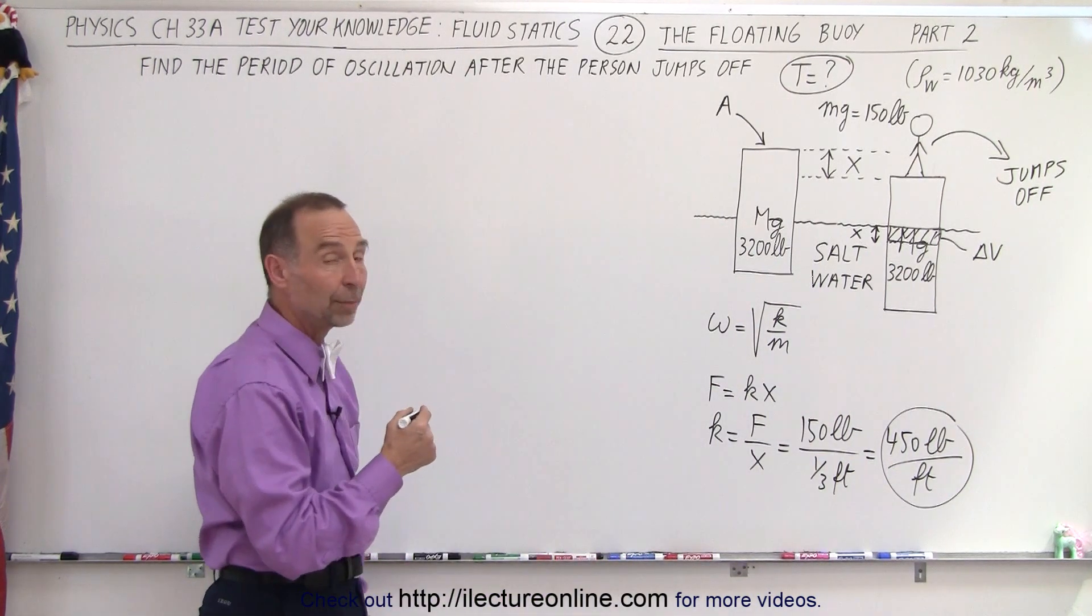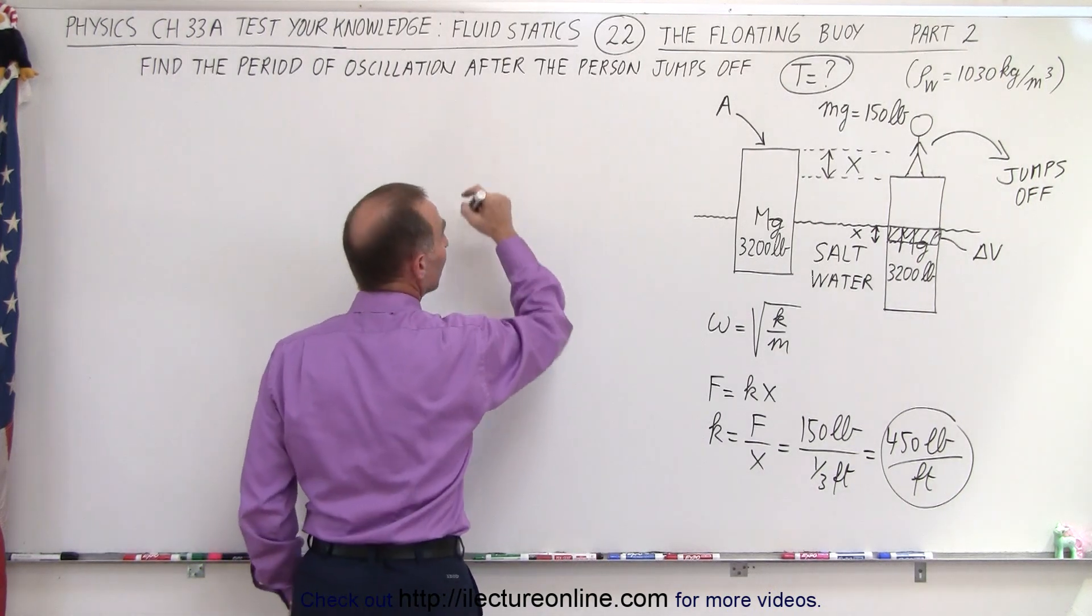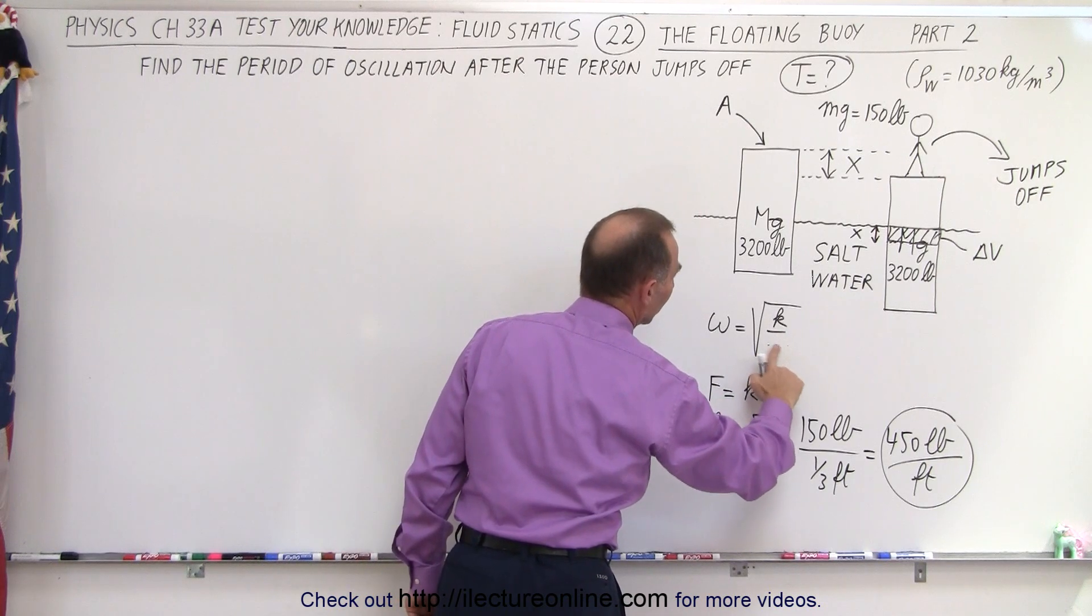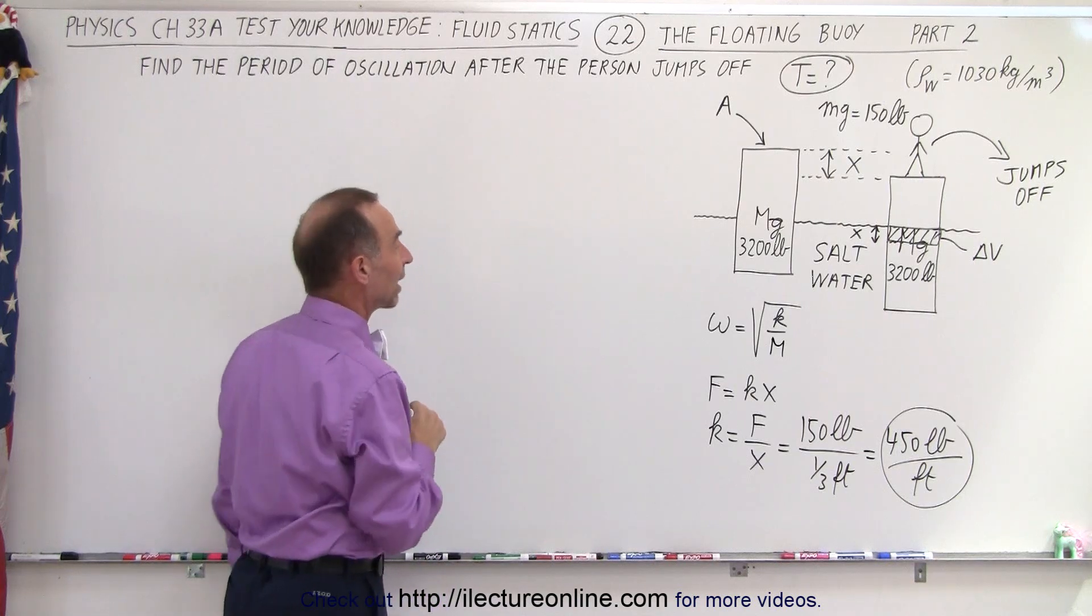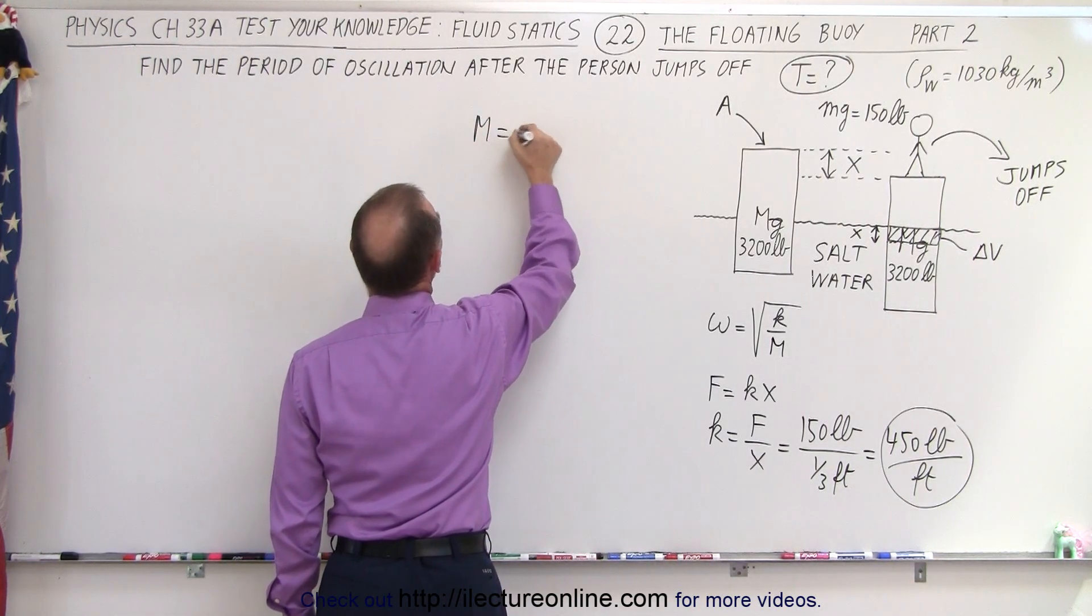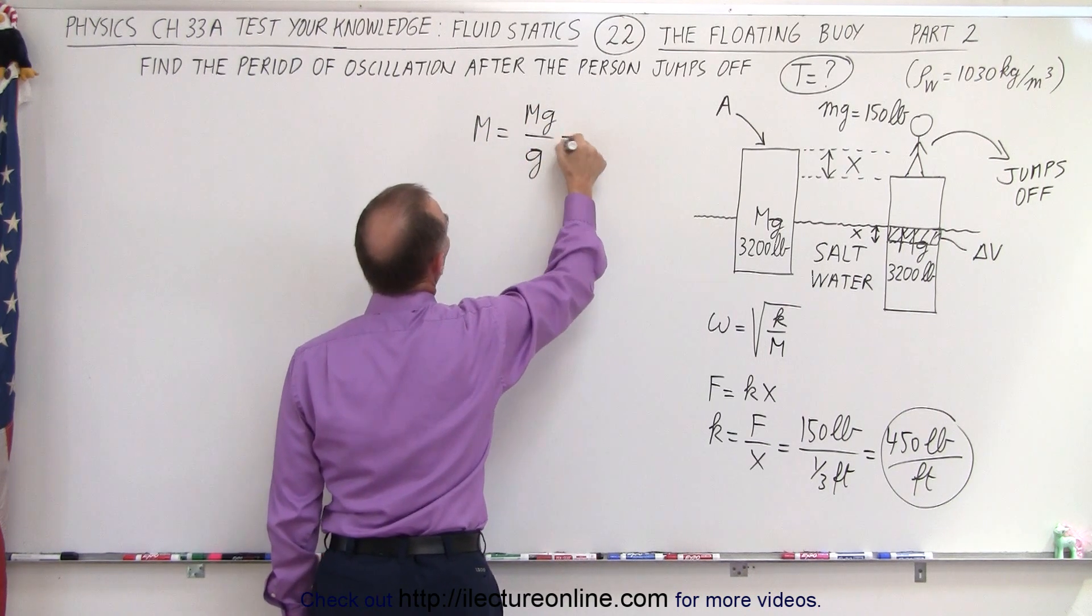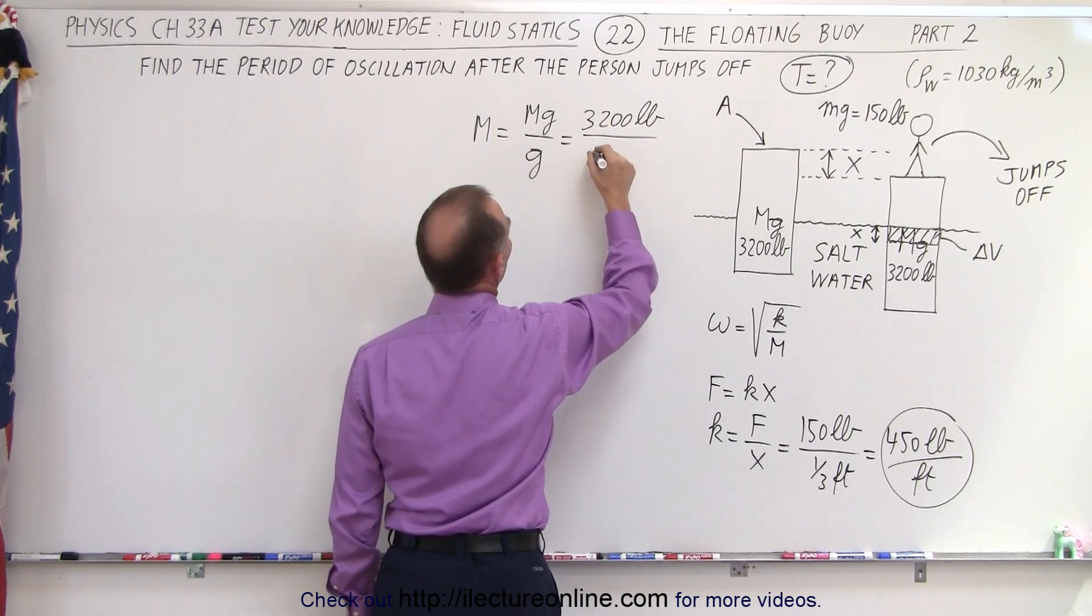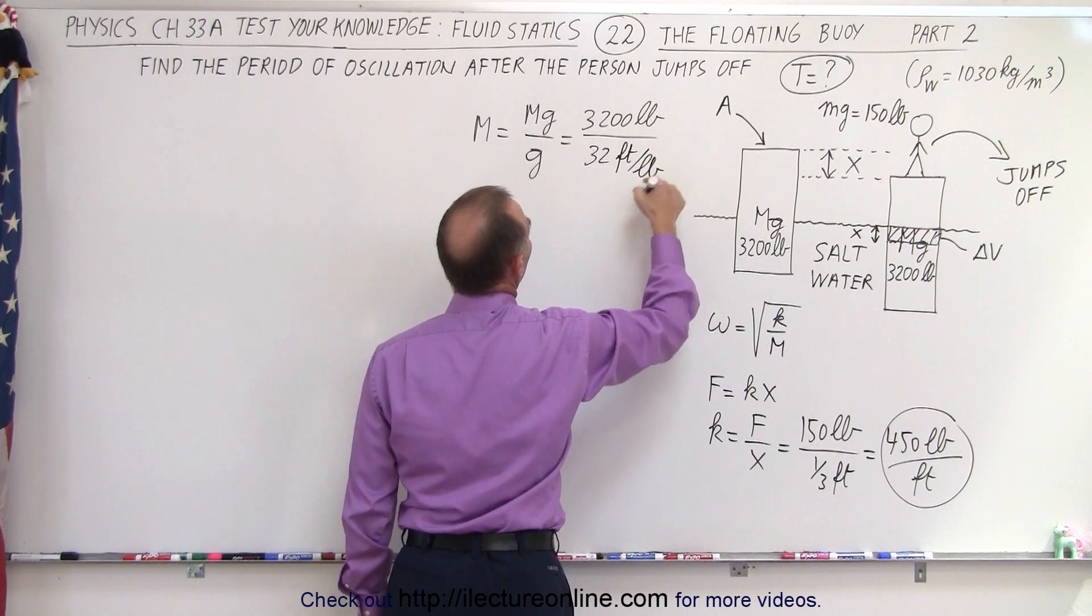Now the mass we're talking about is the mass of the buoy. The mass of the buoy can be found by taking the weight. In this case, the little m is actually going to be the big M, the mass of the buoy, because that's the thing that's going to be oscillating back and forth. So we know that the mass is going to be equal to the weight divided by g. In this case, the weight is 3,200 pounds and g, the acceleration due to gravity, is 32 feet per second squared.